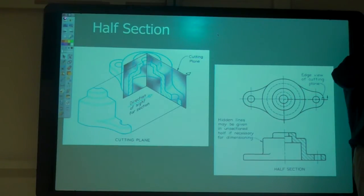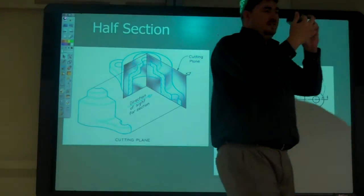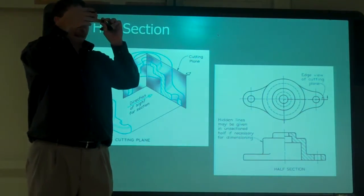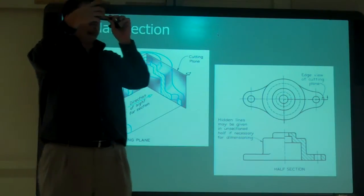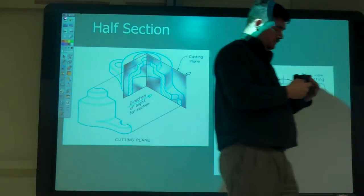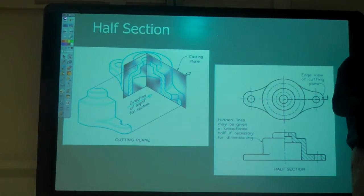Because now we can see the outside too, right? So sometimes you want to be able to see the outside. You want to see this edge go around or you want to see something. So half section lets you see the outside on half and the inside on half. Questions on half section?